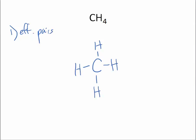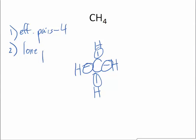And you see that there's one, two, three, four effective pairs. The next thing to do is to count the number of lone pairs. And you see that there's no lone pairs around that carbon. So we're looking on that table for four and zero.